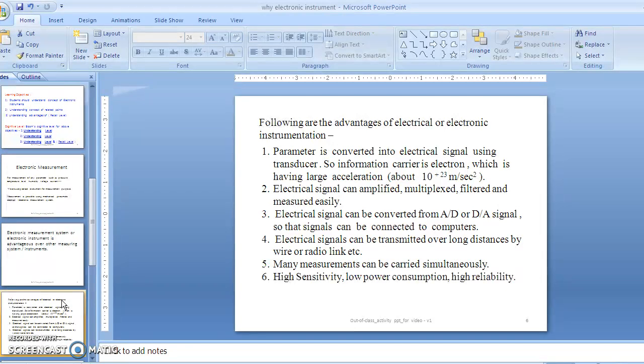The second advantage is that electrical signals can be amplified, multiplexed, filtered, and measured easily. This means the electrical signal given by the transducer undergoes mathematical operations easily, which is not possible in hydraulic, pneumatic, or mechanical measurement systems.